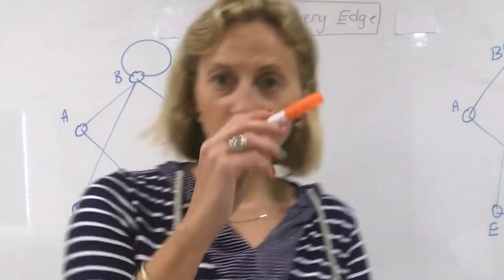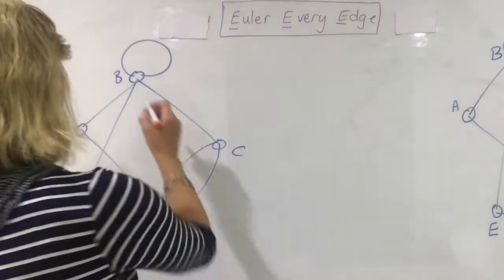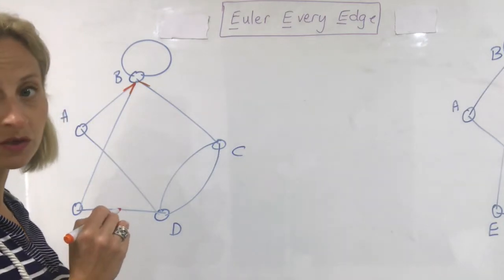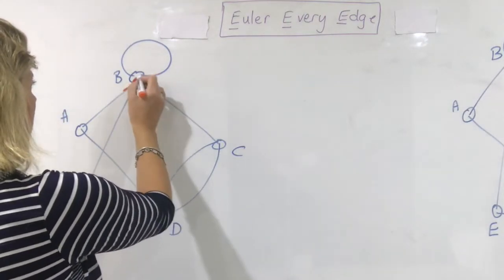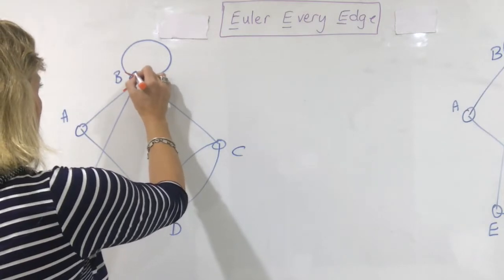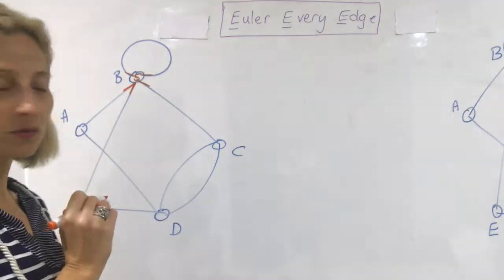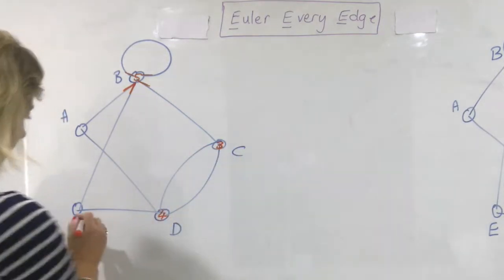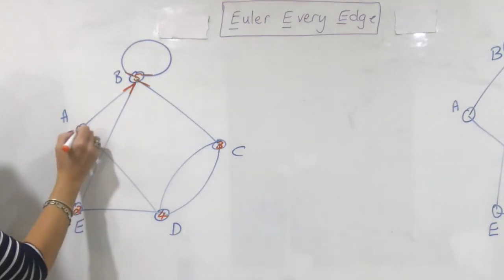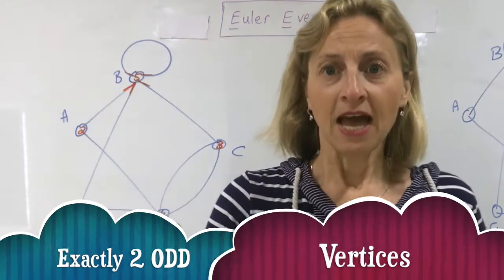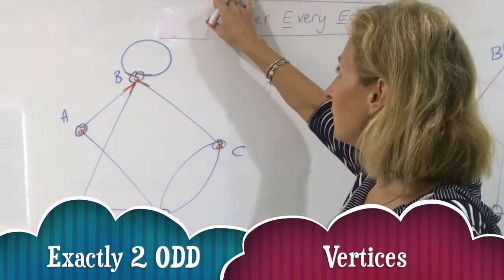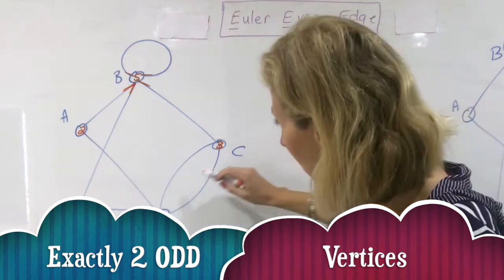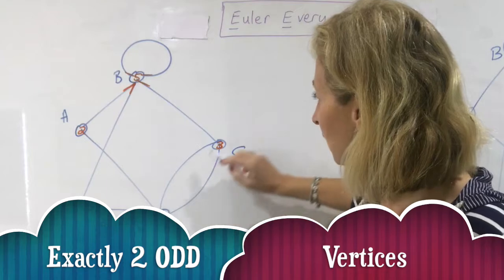I'm not going to write down every single degree on the side. Remember, it's how many lines coming out of a vertex, and a loop counts as two degrees. This one has five degrees. This one has three. This one has four. This one has two, and this one has two. So I have two, two, four — all even — and three and five, which are odd.